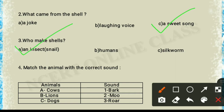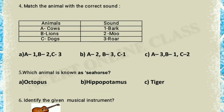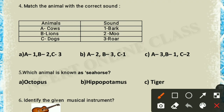Question 4: match the animal with their correct sound. Cow's sound is moo, so cow matches with moo. Lion's sound is roar, and dog's sound is bark. So that is the correct answer.